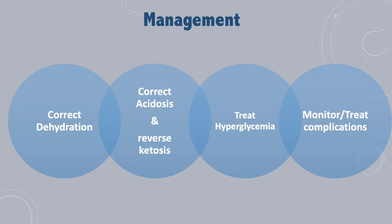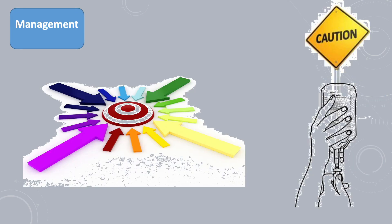The goals of the management of DKA patients include correcting dehydration, correcting the acidosis and reversing ketosis, treating hyperglycemia, and monitoring and treating the complications. Achieving these goals is done by multiple therapeutic actions, but we always stress a very important point which is prevention of complications, especially cerebral edema which is fatal. The other extremely important point is you have to follow your hospital guideline or protocol.